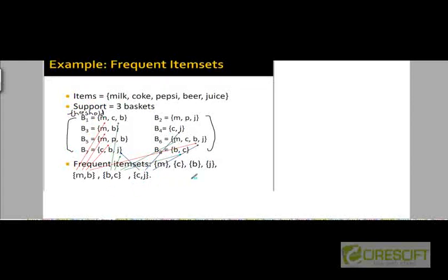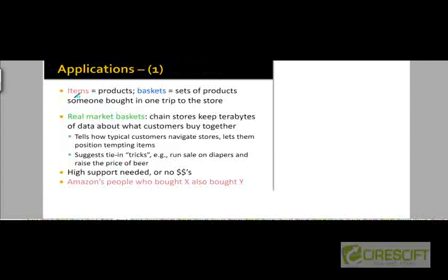Frequent item sets can be used by a supermarket store to increase profits. The items are the products and the baskets are the sets of items purchased in one trip to the store. In a real market basket scenario, a chain store keeps terabytes of data about what customers buy together across all their stores. This can tell them how to position tempting items in the aisles so that customers navigating the store can purchase other items based on what they have already put in their shopping cart.